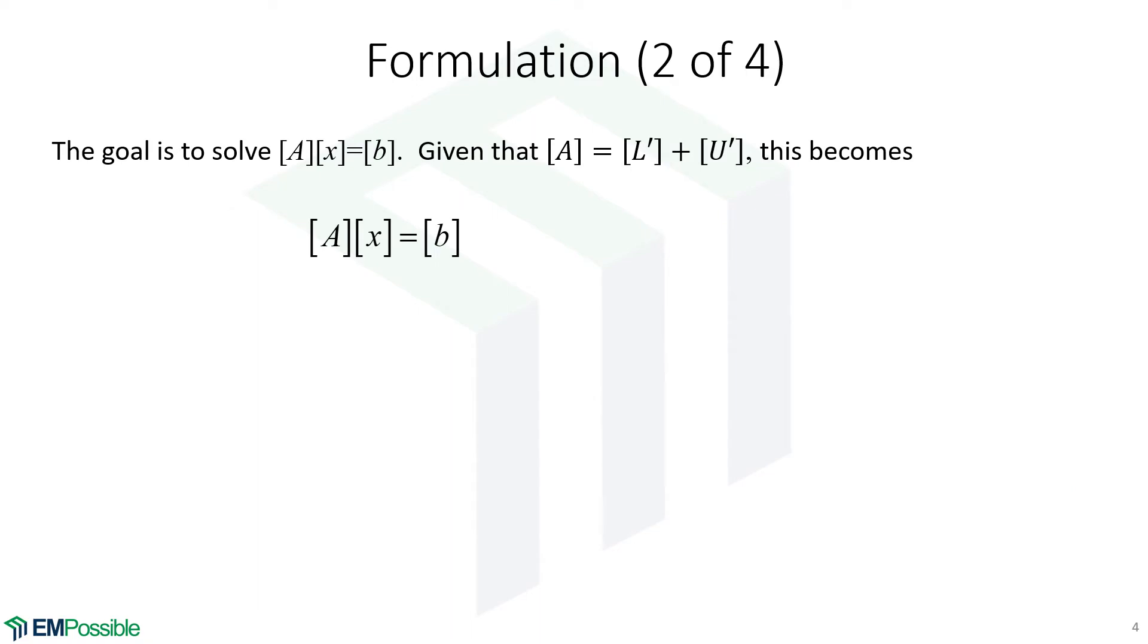Now, we want to solve AX equals B, and we know that A is L plus U. Let's substitute this into our equation and see where we are. We have AX equals B. We split A into L plus U. Then we multiply that out. So we have LX plus UX equals B.